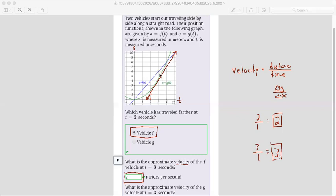So even though at three seconds the f car has traveled further, its velocity isn't as fast. This one started out slower but now it's picking up speed and it's going to overtake the f vehicle.